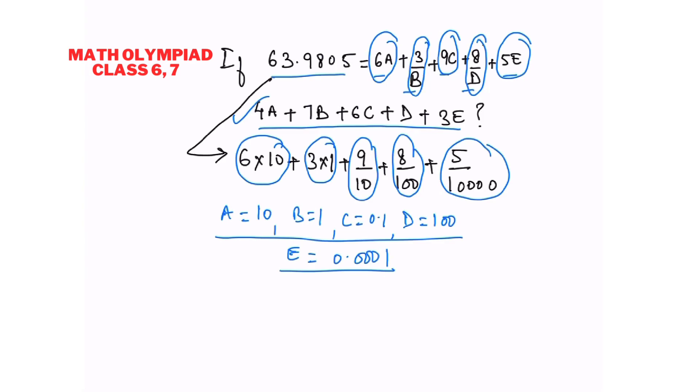So it will take the form as 4a means 40, 7b means 7, 6c. c is 0.1 so it will be 0.6, d is equal to 100, and 3e means 0.0003. 147.6003, this is our answer.